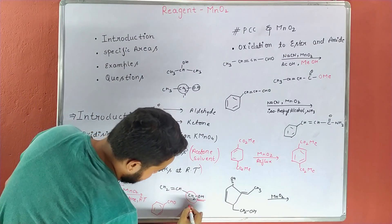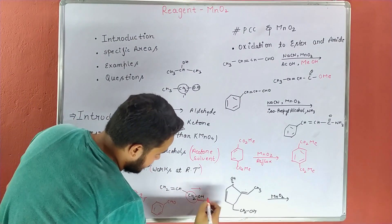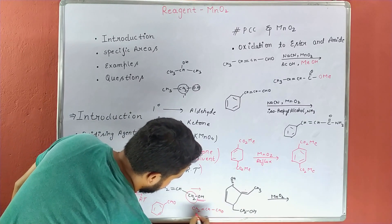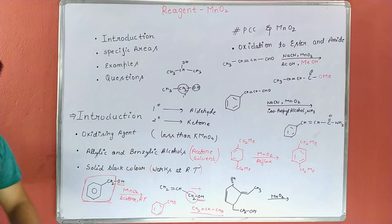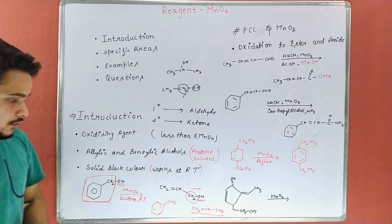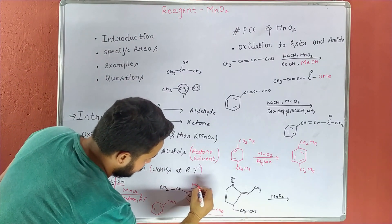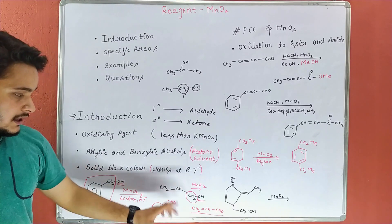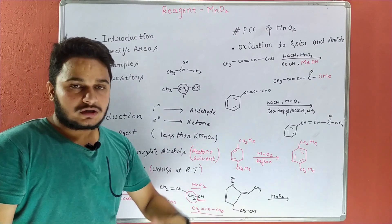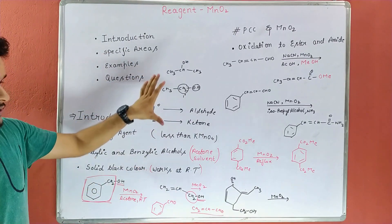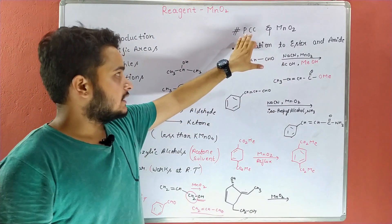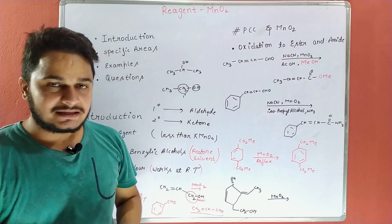This is known as allylic alcohol — it converts CH2 double bond CH to CHO. This product is formed via MnO2 reaction. This is our primary alcohol.